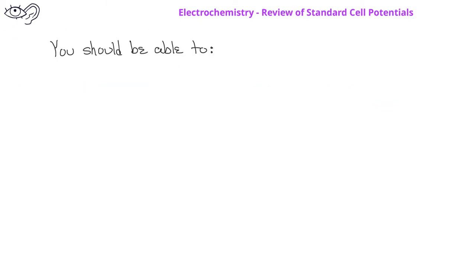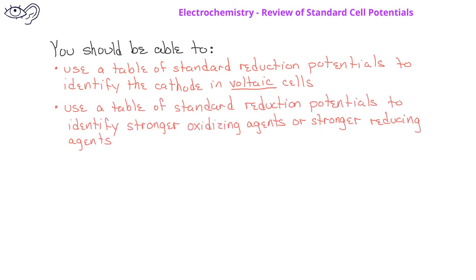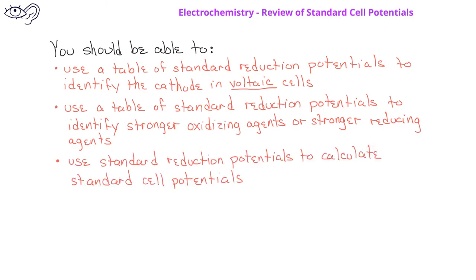After watching this video, you should be able to use a table of standard reduction potentials to identify the cathode in a voltaic cell. You should be able to use a table of standard reduction potentials to identify the stronger oxidizing agents or stronger reducing agents. Finally, you should be able to use standard reduction potentials to calculate the standard cell potential for a given electrochemical cell.